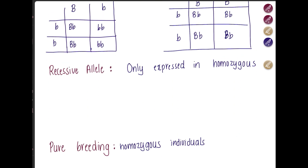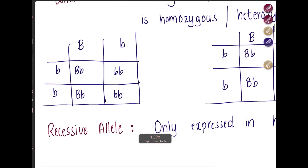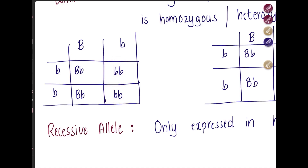A recessive allele, on the other hand, is only expressed in homozygous individuals. For example, small letter b could represent white fur. Only homozygous recessive individuals express the recessive allele — only those two would be white. In the other individuals, even though the recessive allele is present, it's not going to be expressed.